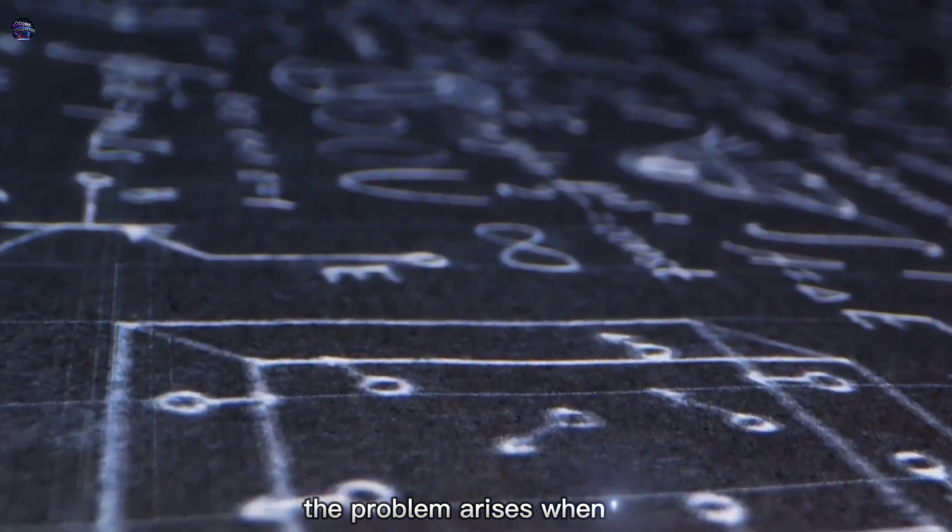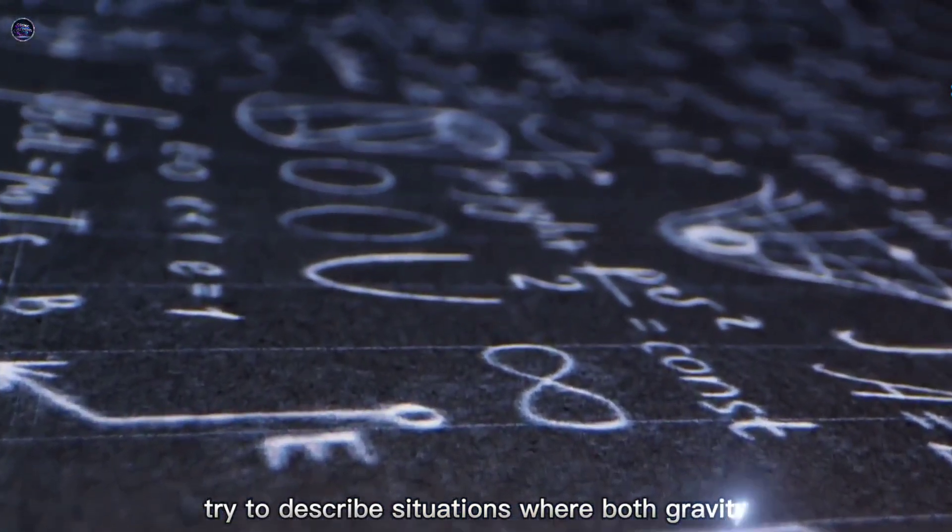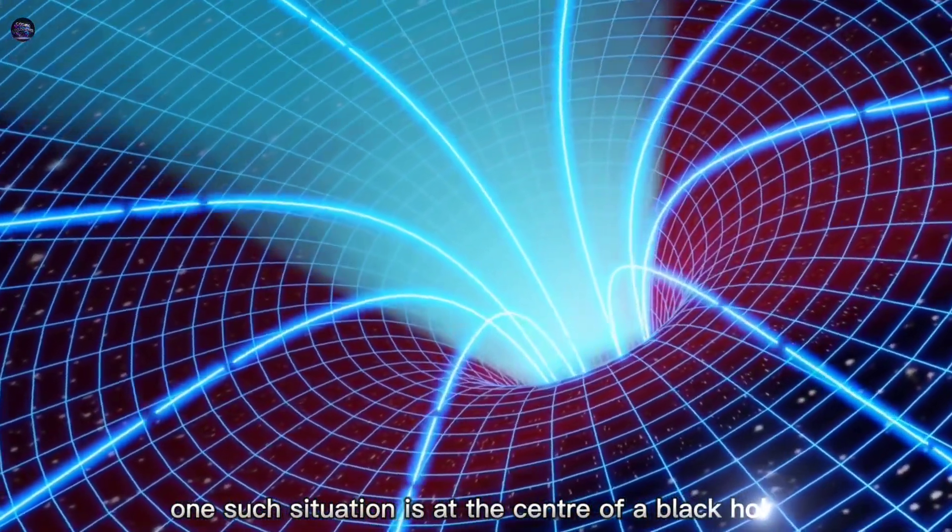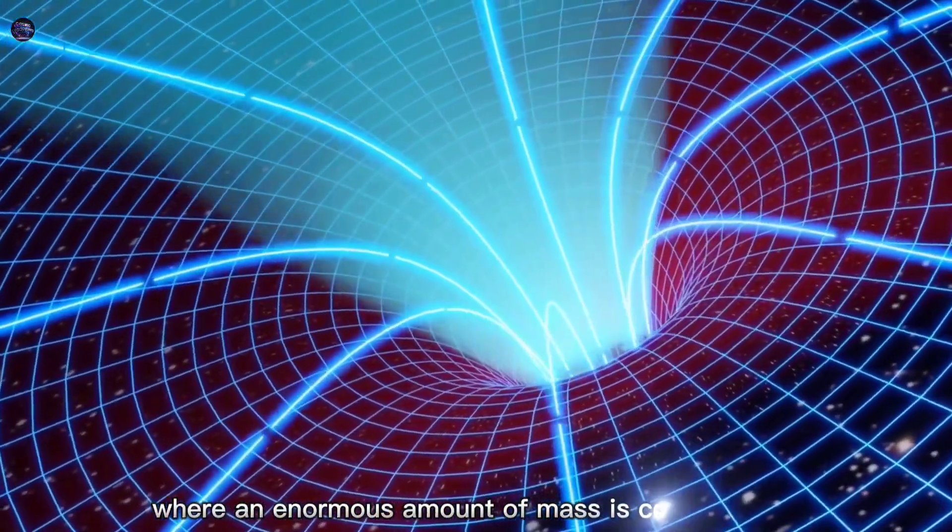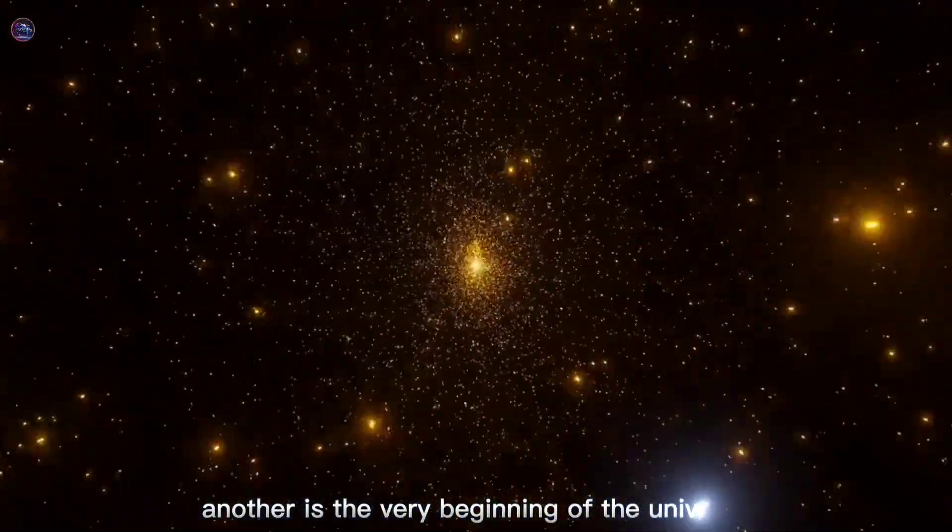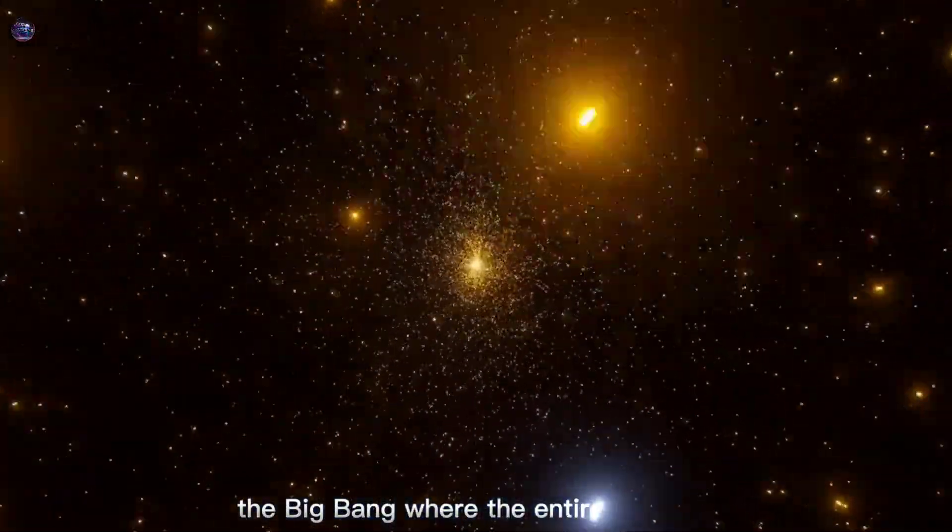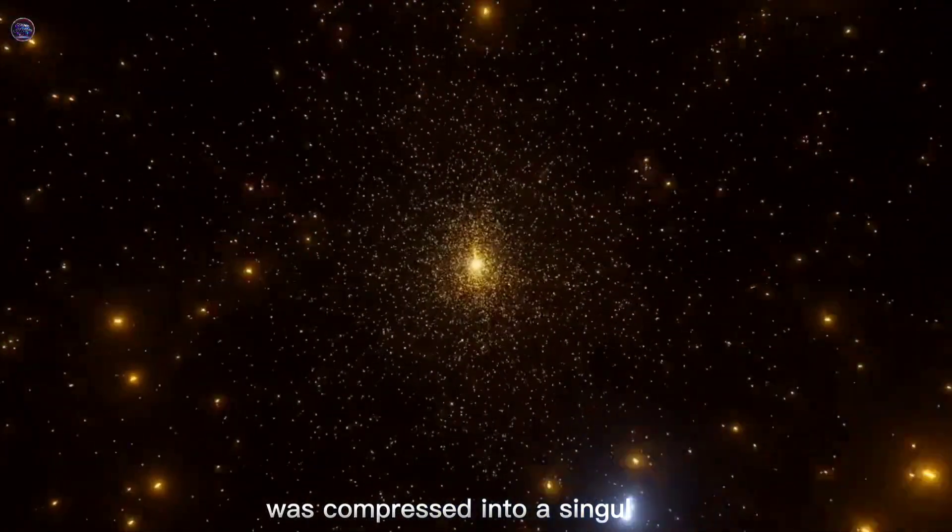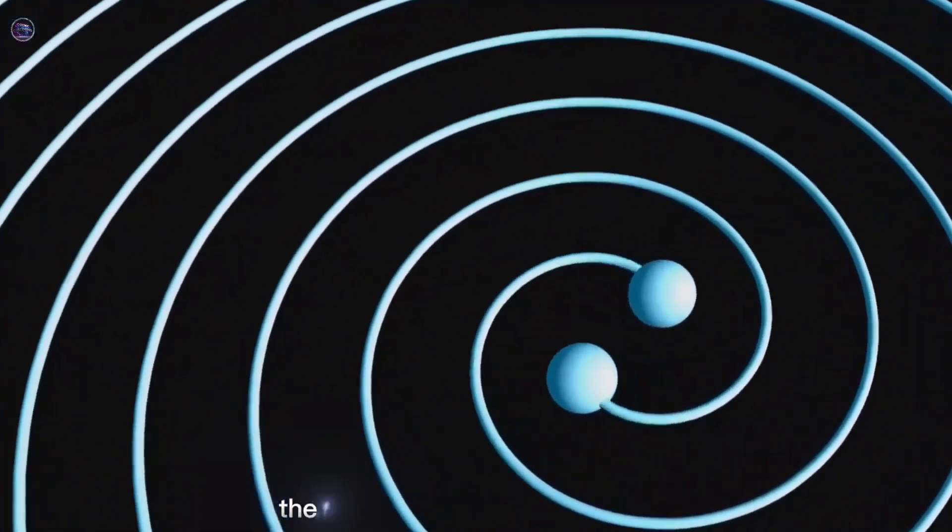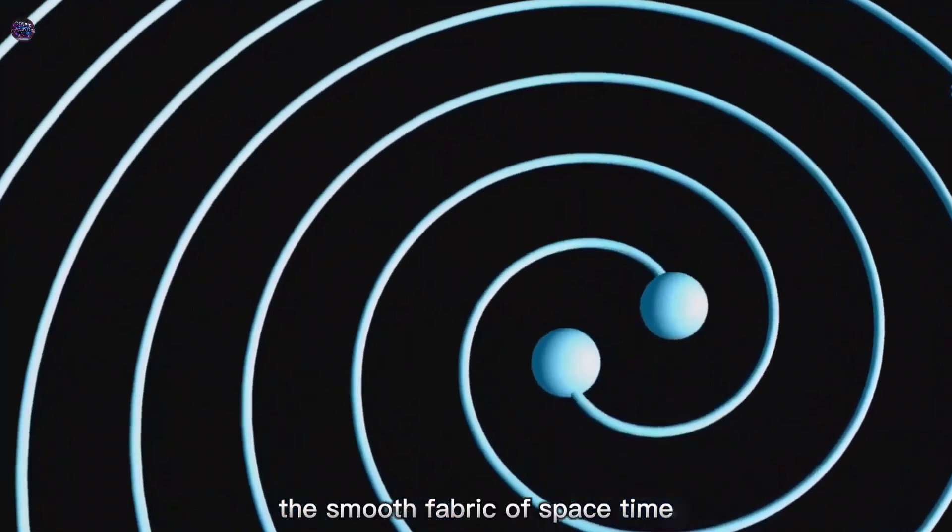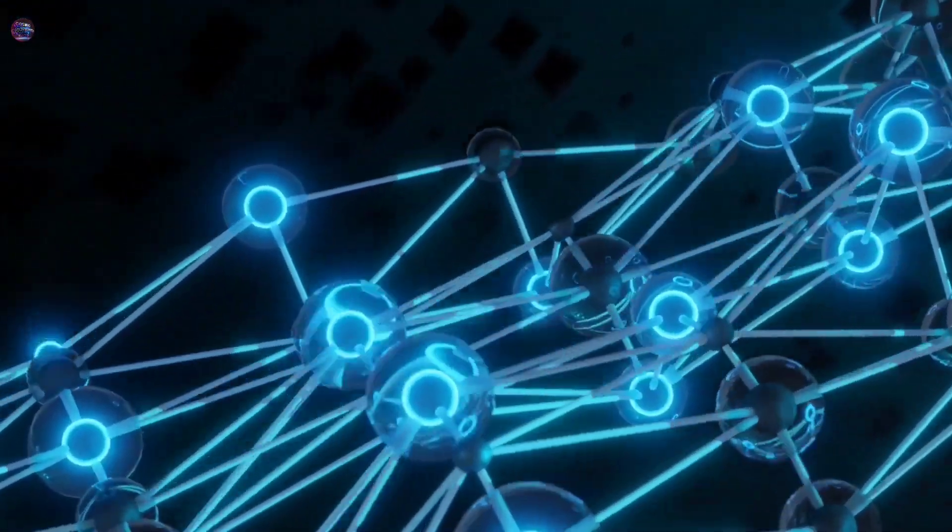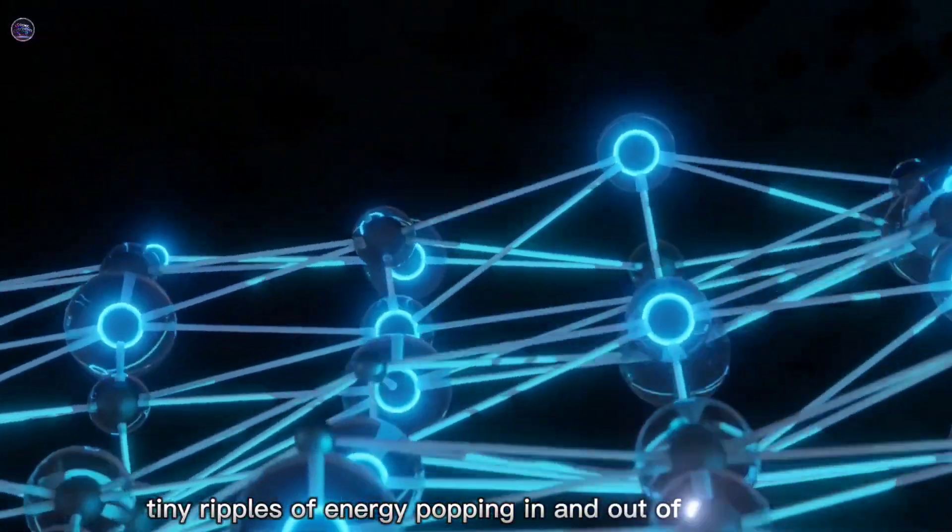The problem arises when we try to describe situations where both gravity and quantum mechanics are important. One such situation is at the center of a black hole, where an enormous amount of mass is concentrated in an infinitesimally small space. Another is the very beginning of the universe, the Big Bang, where the entire universe was compressed into a singularity, a point of infinite density. In these extreme environments, the smooth fabric of space-time envisioned by general relativity becomes riddled with quantum fluctuations, tiny ripples of energy popping in and out of existence.